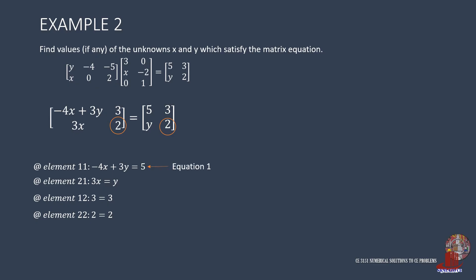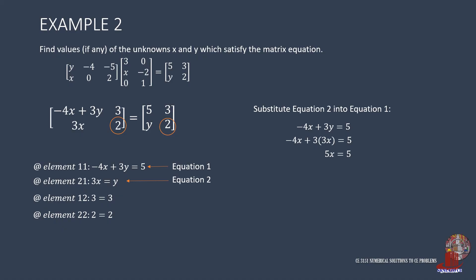Take equation 1 as negative 4x plus 3y equals 5, and equation 2 as 3x equals y. Through algebra, substitute equation 2 into equation 1: negative 4x plus 3 times 3x equals 5. This reduces to 5x equals 5, which makes x equal to 1. Knowing x is 1, place this into the second equation: 3 times 1 equals y. Thus, y equals 3.